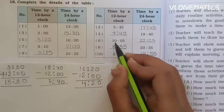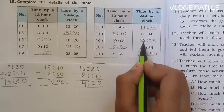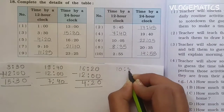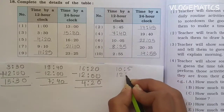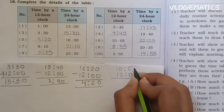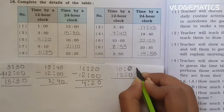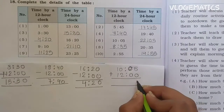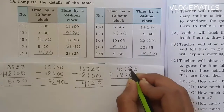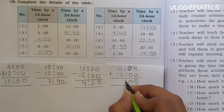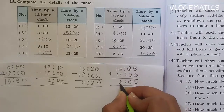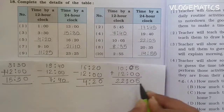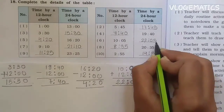Number 6: 10:05 in 12-hour clock. We need to write it in 24-hour format, so we add 12. 5 plus 0 is 5, 0 plus 0 is 0, 0 plus 2 is 2, 1 plus 1 is 2. So the answer is 22:05.